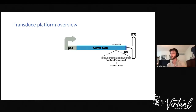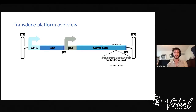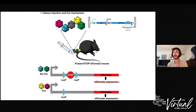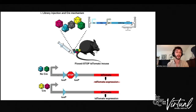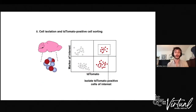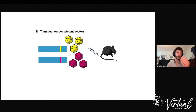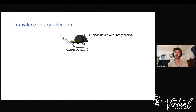With iTransjuice, in addition to the standard library setup, we also incorporate Cre into the cassette. We inject this Cre-containing library into a transgenic mouse containing a flox-stopped fluorescent reporter, such that in cells that don't get any vector or only get dud vectors, you don't get any TdTomato expression. But in functionally transducing variants, you do. You can then flow-sort TdTomato-positive cells from your tissue of interest, with the hope that the vectors drawn are transduction-competent.